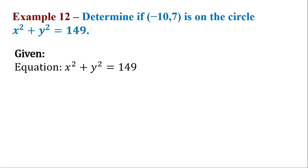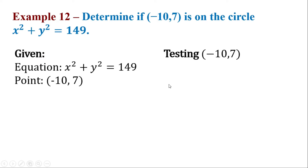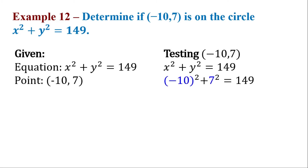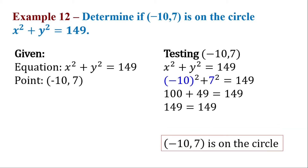Let's write the given, the equation, and the point. Let's test negative 10 comma 7 and substitute it to x and y of the equation of the circle. So negative 10 squared is 100, 7 squared is 49. So 149 is equal to 149. Therefore, negative 10 comma 7 is a point on the circle.